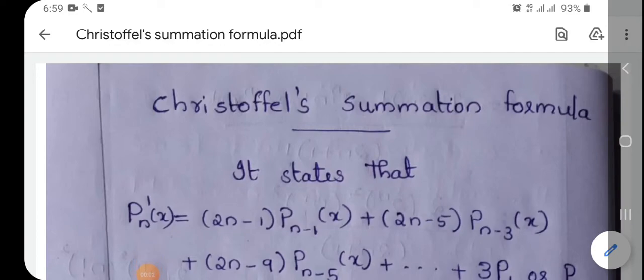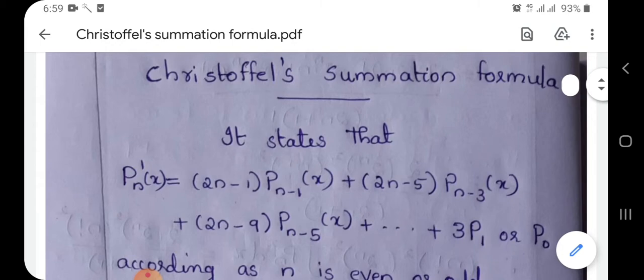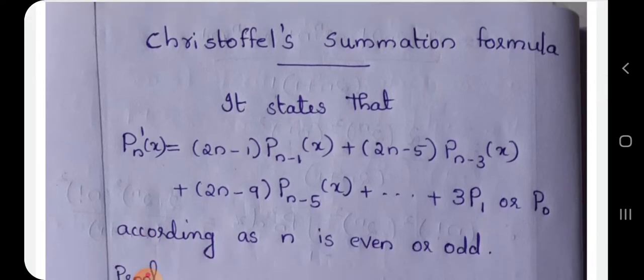Next topic is Christopher's summation formula. Christopher's summation formula states that Pn' of x equals (2n-1) Pn-1 of x plus (2n-5) Pn-3 of x plus (2n-9) Pn-5 of x plus etc. The last term is 3P1 or P0 according as n is even or odd. This is called Christopher's summation formula.